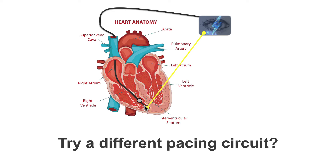So what we can do is try a unipolar setup. Here we're using one of the electrodes on the pacemaker lead, and we are using the pacemaker itself as the other electrode. You can see we've changed the direction of the electrical current, which is why we sometimes refer to this as a change in pacing vector.